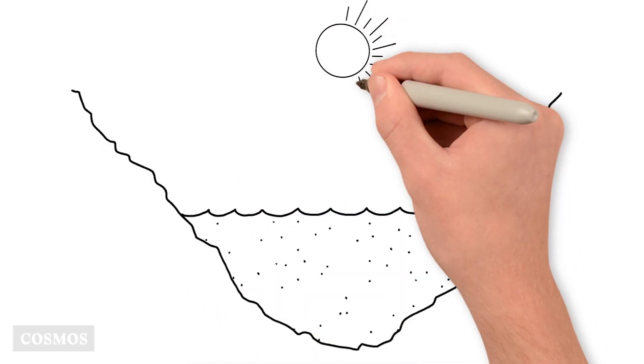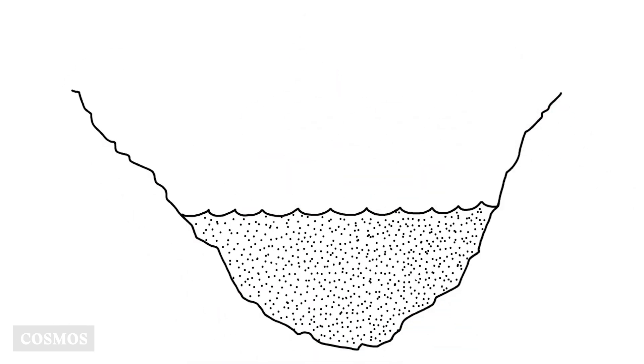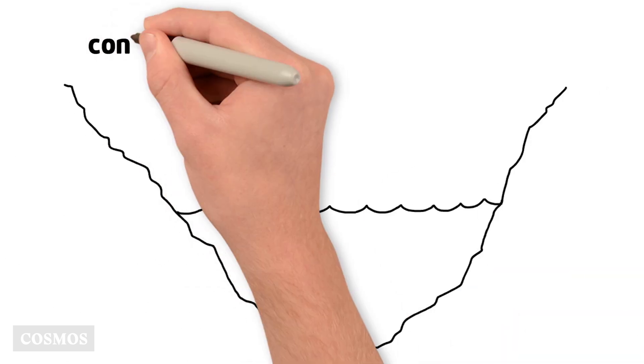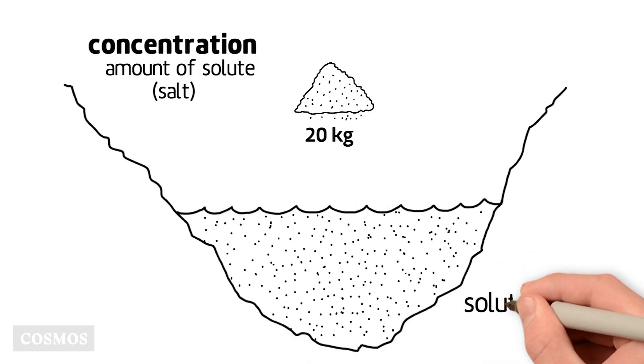In the hot climate, the water evaporates, and over time the concentration of salt builds up. The concentration of a solution is the amount of solute, in this case salt, dissolved in a certain amount of the solution.